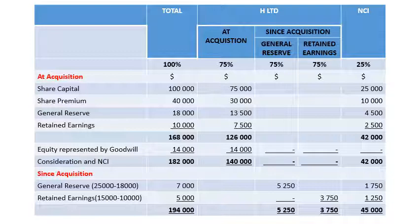NCI is measured as the proportion of net assets: 25% of $168,000 gives $42,000. The consideration paid was $140,000. Since we paid more than our share of net assets by $14,000, that $14,000 represents goodwill. Don't put underlines on the total yet because we still need to add some since-acquisition reserves.